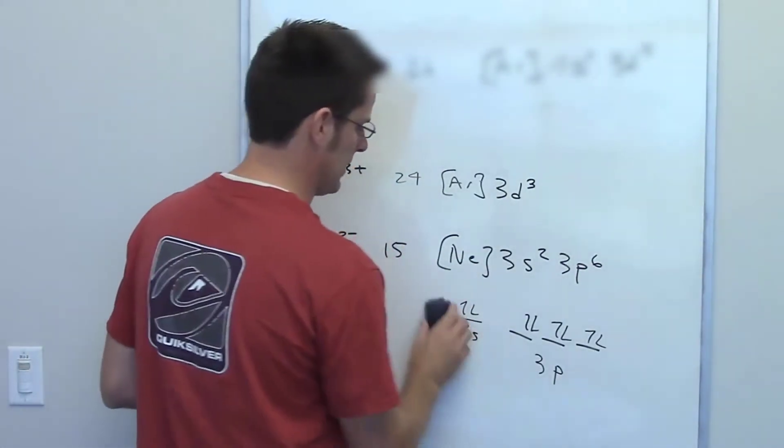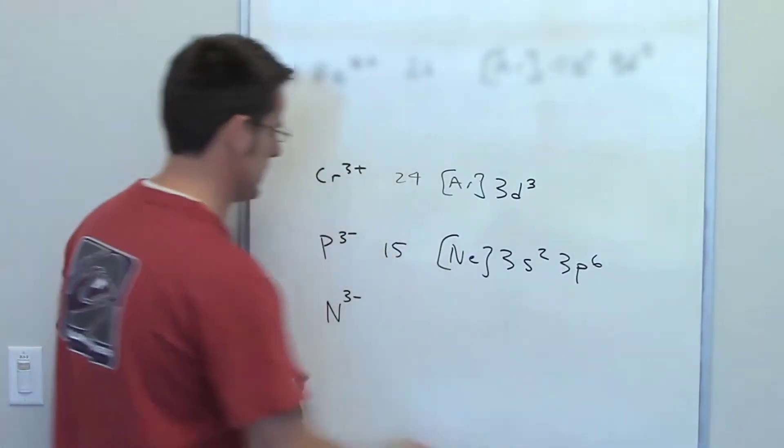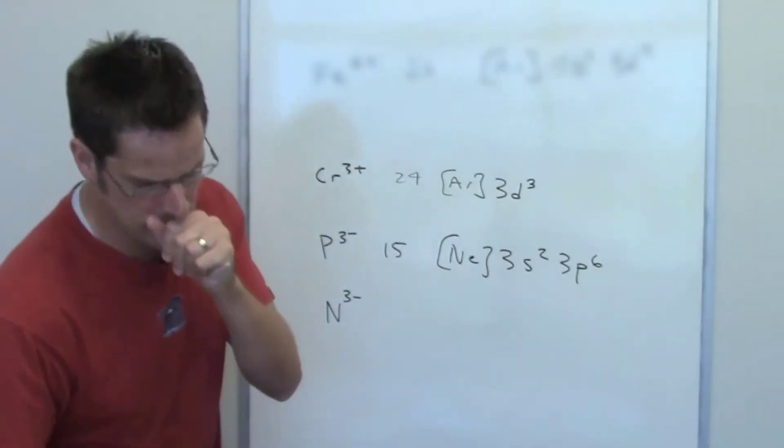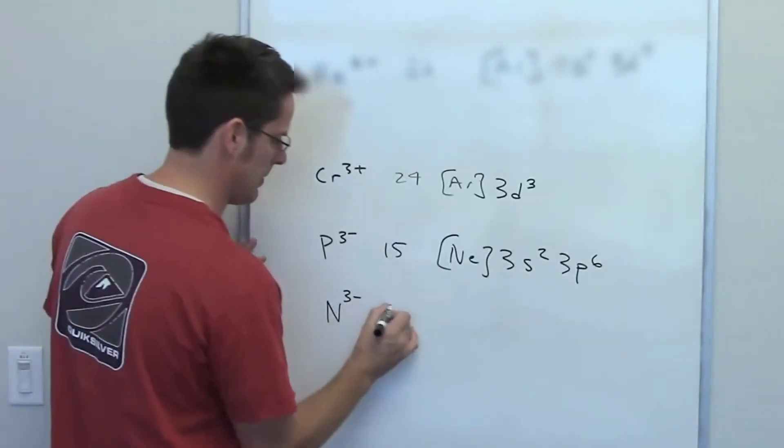Nitrogen is similar because it is in the same column as phosphorus. It's just in one row higher. Its atomic number is seven.